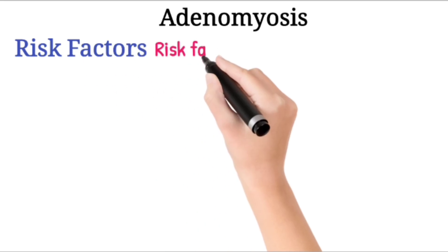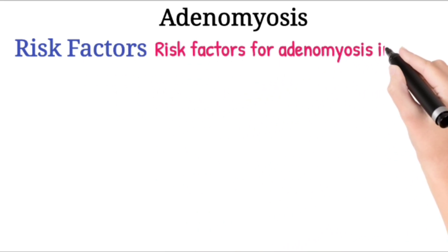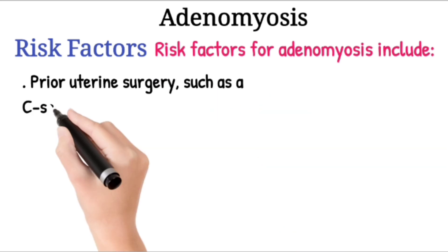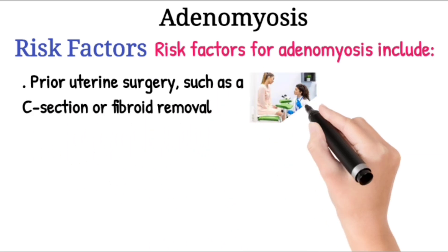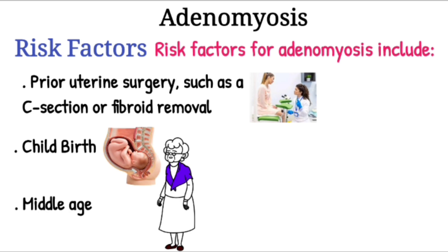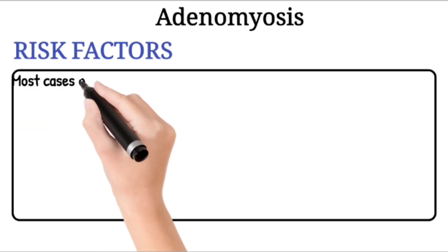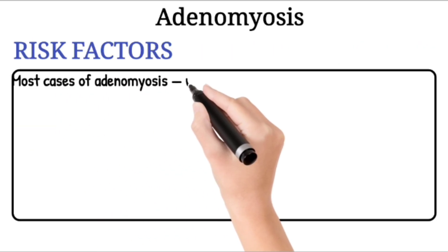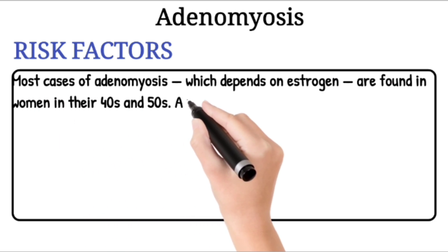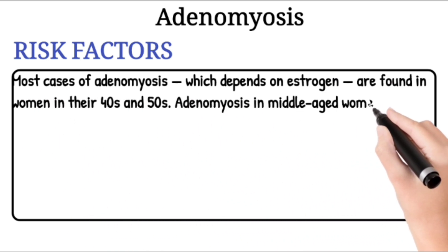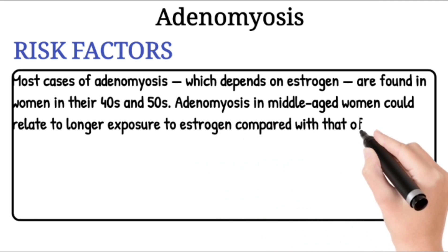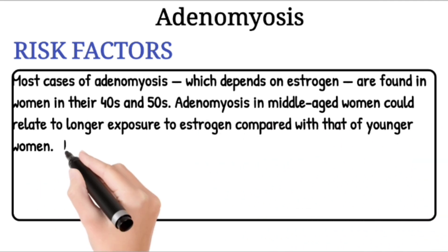Risk factors. Risk factors for adenomyosis include prior uterine surgery such as a C-section or fibroid removal, childbirth, and middle age. Most cases of adenomyosis, which depends on estrogen, are found in women in their 40s and 50s. Adenomyosis in middle-aged women could relate to longer exposure to estrogen compared with that of younger women.